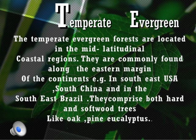Temperate evergreen forests are found between the Tropic of Cancer and the Arctic and Antarctic circles. They are commonly found on the eastern margin of continents — in the southeast USA, south China, and southeast Brazil. These forests have trees, shrubs, and bushes with less undergrowth. Most trees are deciduous and shed their leaves during autumn. The main trees found here are oak, ash, beech, elm, and pine, comprising both hard and soft trees. Hard trees include olive, cork oak, and stone pine.